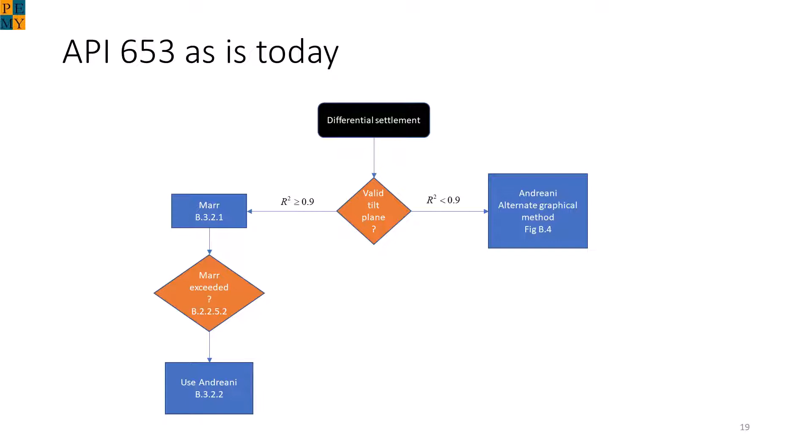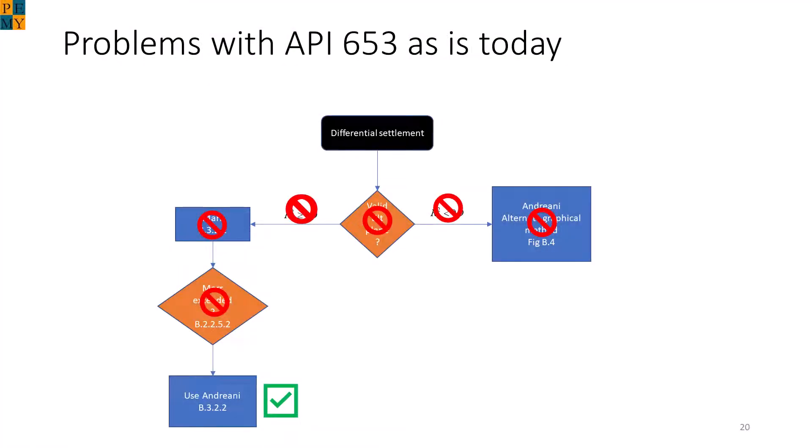So with this background, we are ready to see how to fix differential settlement in API 653. This slide shows the current rules as of the fifth edition of API 653. Note the R-squared criteria. If R-squared is valid, then the Marr method is used, and if that fails, you can use the Andriani method. If the tilt plane is not considered valid, then the user is directed to the incorrect alternative graphical method. As you can see, there is much that is suboptimal with the current differential settlement protocol in API.